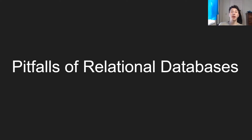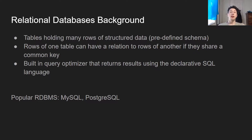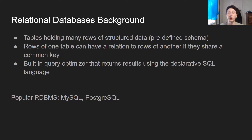Let's talk about the pitfalls of relational databases. For me to talk about why something is bad, I must first talk about what it actually is. Relational databases are comprised of tables that hold a bunch of rows of structured data. That means they're using a predefined schema, which means that all of the columns have been predefined on table creation. Until you do some sort of alter table or use an optional field, the schema generally stays constant, which makes it a little bit hard to adapt.